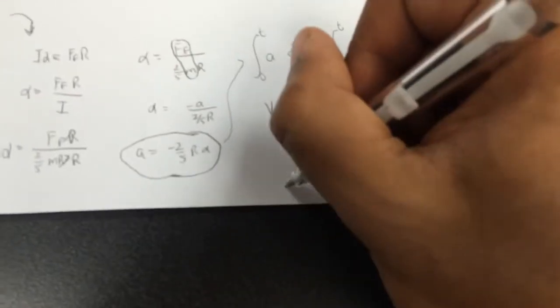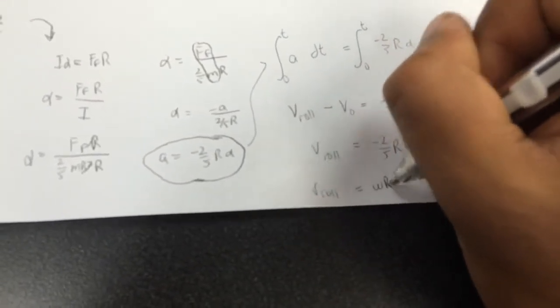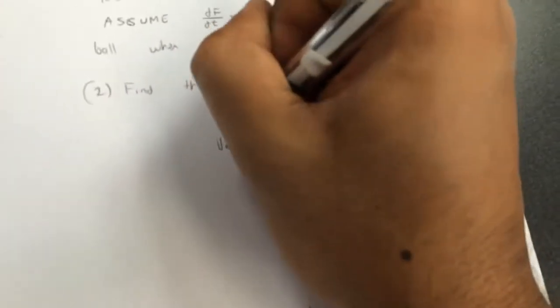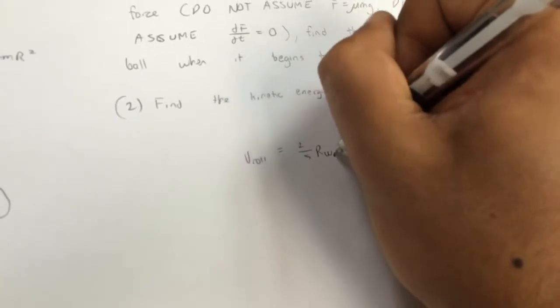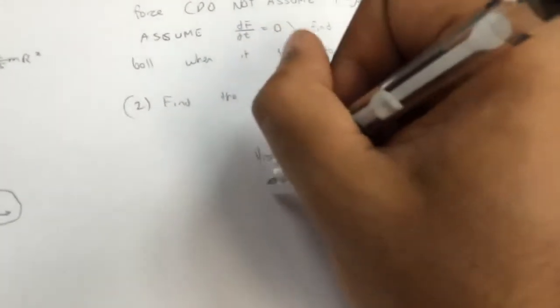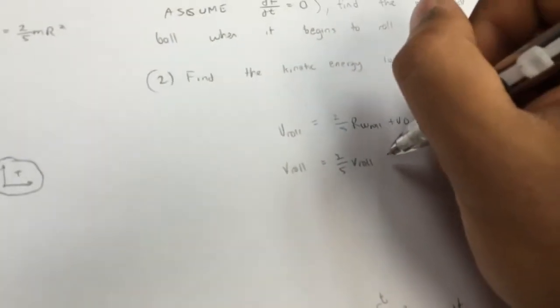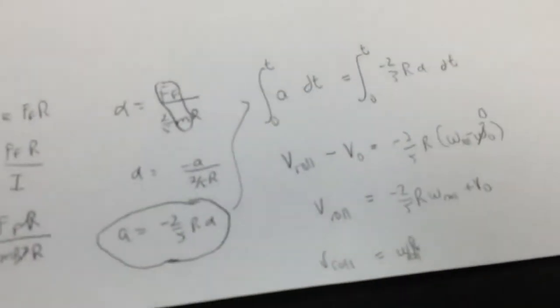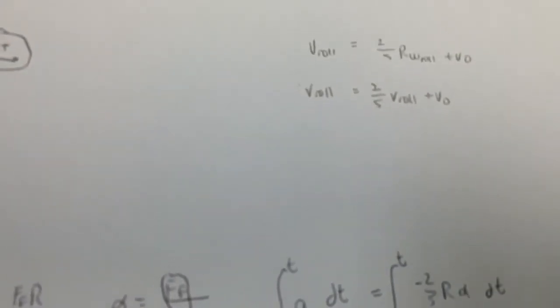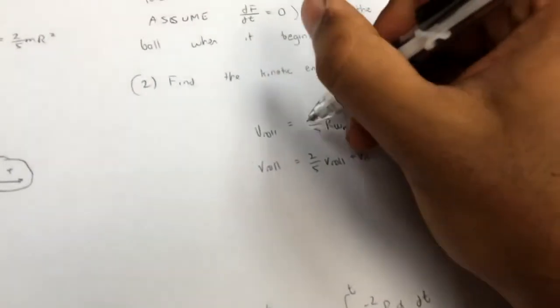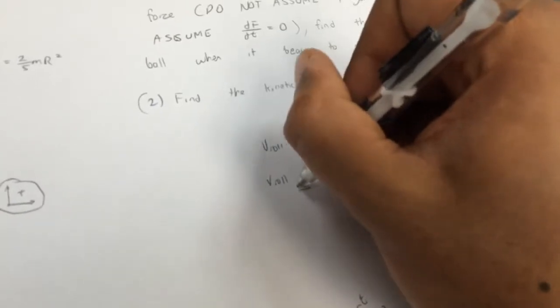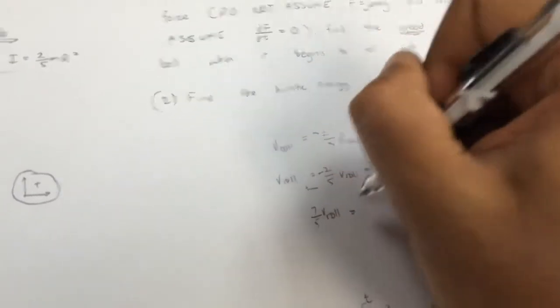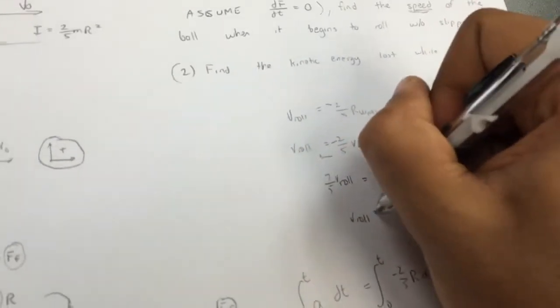And at this point, we can use our rolling constraint that v_roll is omega_roll r because that's the rolling without slipping constraint. So if we bring this up over here, we have v_roll is 2/5 r omega_roll plus v_0. So our v_roll equals 2/5 v_roll plus v_0. Just a minute, I want to check if I didn't do something wrong here. Sorry, this is, I forgot the negative here. There's a negative here. So that's negative. So if I bring this over to the other side, then 7/5 v_roll is v_0. So we have v_roll is 5/7 v_0. Yay.